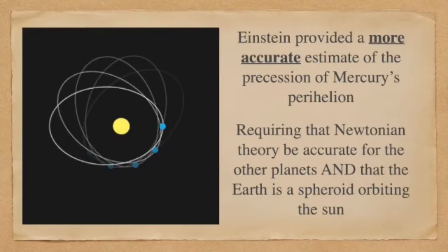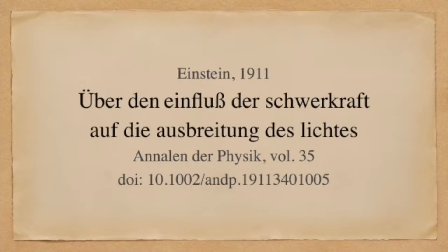Why does everybody think that Einstein was such a clever clogs? It turns out that beyond the terrestrial system, there are examples where Newtonian theory is inaccurate. In his 1916 paper, Einstein resolved a decades-old scientific puzzle by accurately calculating the precession of the perihelion of Mercury's orbit around the Sun using the theory of general relativity.